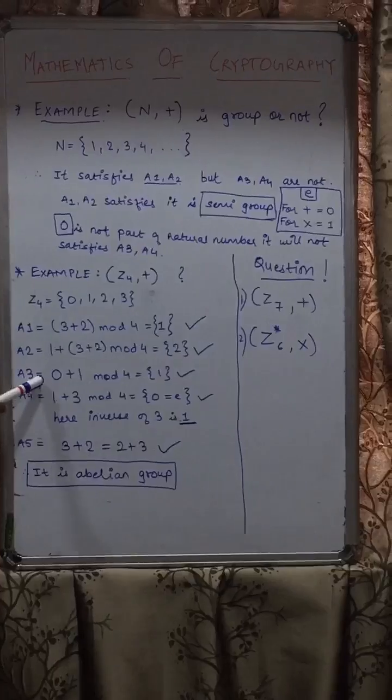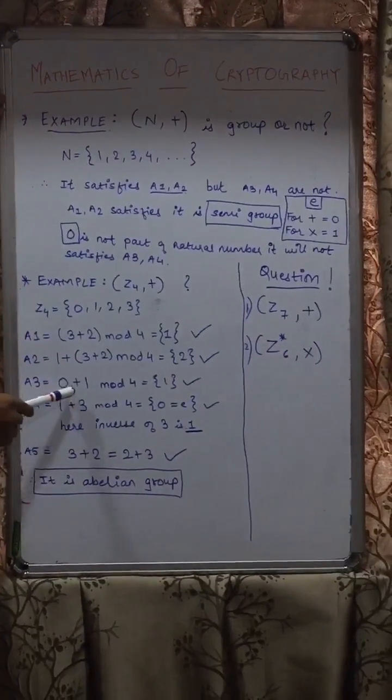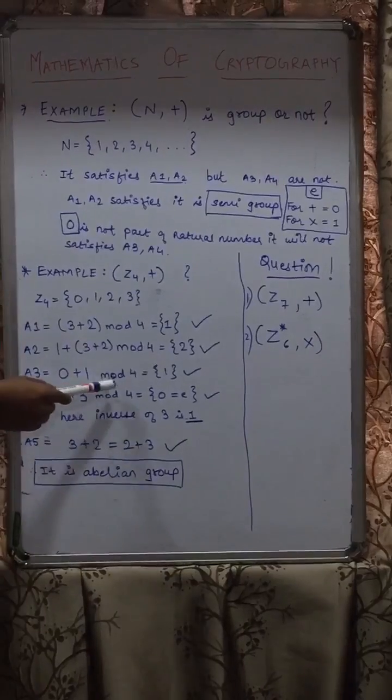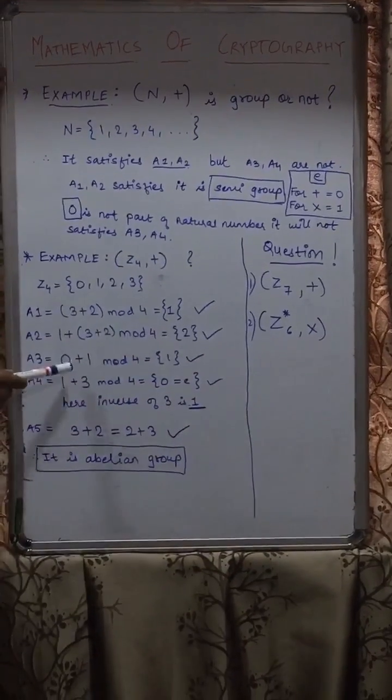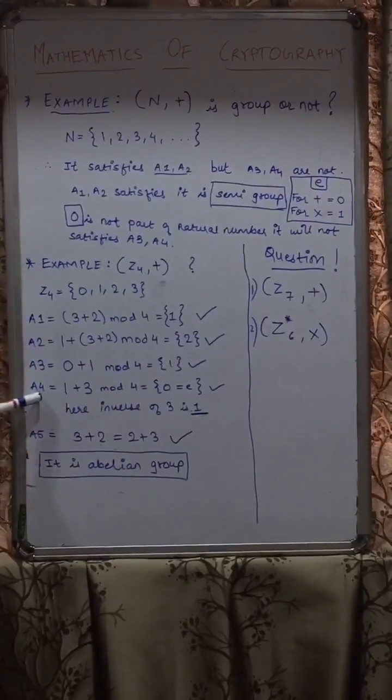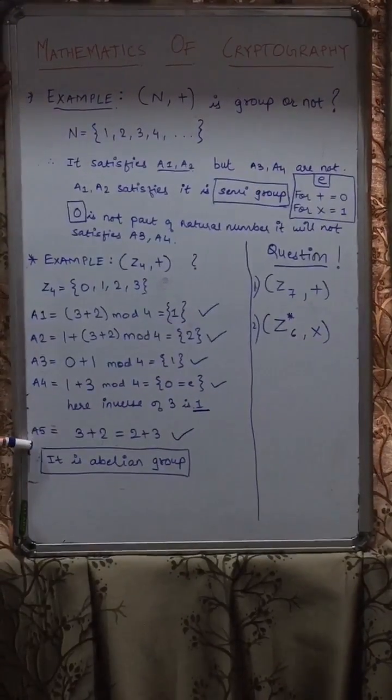Now A3. For A3 we have identity element, as it is addition, so we will have 0. So 0 + 1 mod 4 gives us 1, and as 0 is included in our domain, so it also satisfies. Similarly A4 also satisfies and A5 also satisfies.